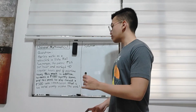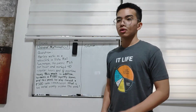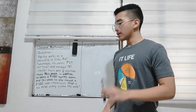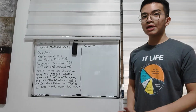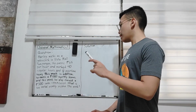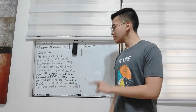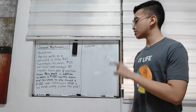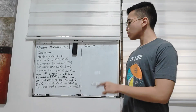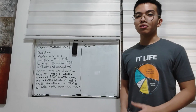...works 40 regular hours and eight overtime hours this week. In addition, he earns a 1,000 pesos monthly bonus, and this week he also earned a 500 pesos sales commission. What is his total weekly income this week?